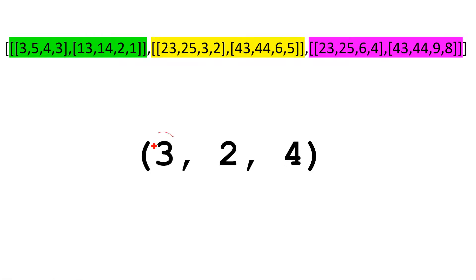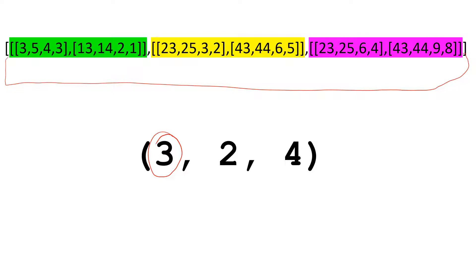Now let's talk about each number. The first number is three. This means the outermost array is having three elements inside it — this is the outermost dimension. But this three doesn't mean it is the third dimension; it is simply saying that in the outermost dimension you have three elements. Each of these colored arrays you see here are those three elements.